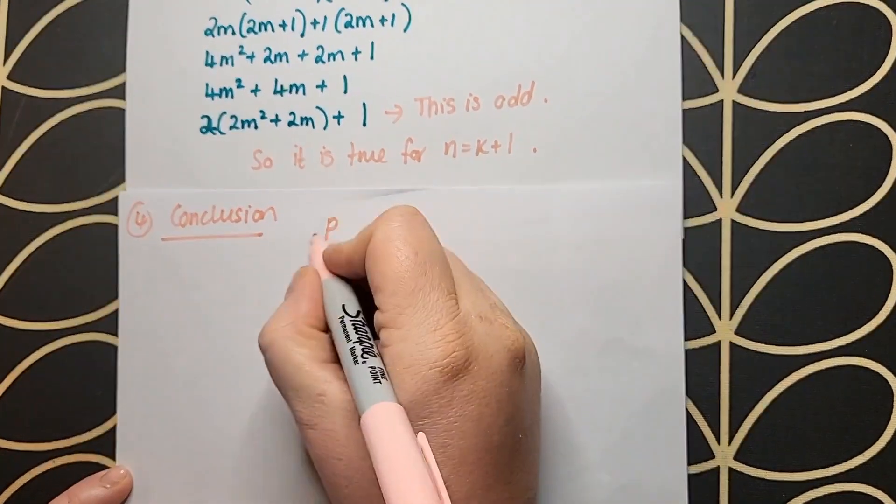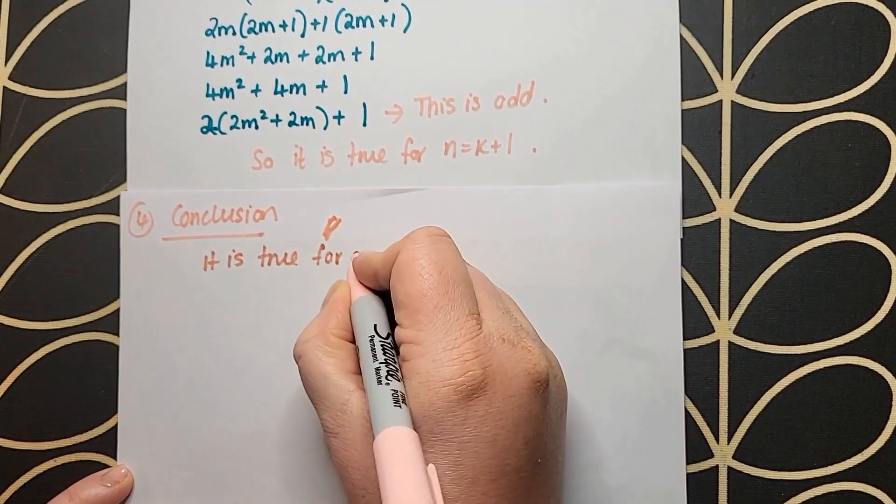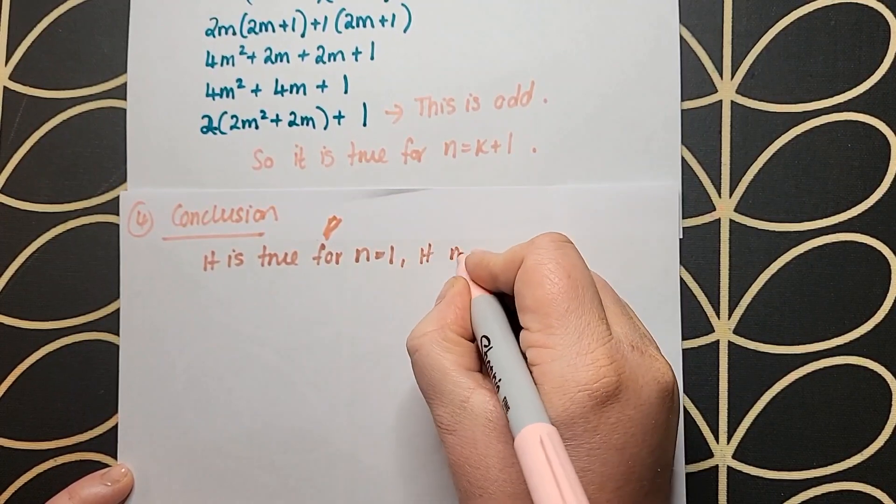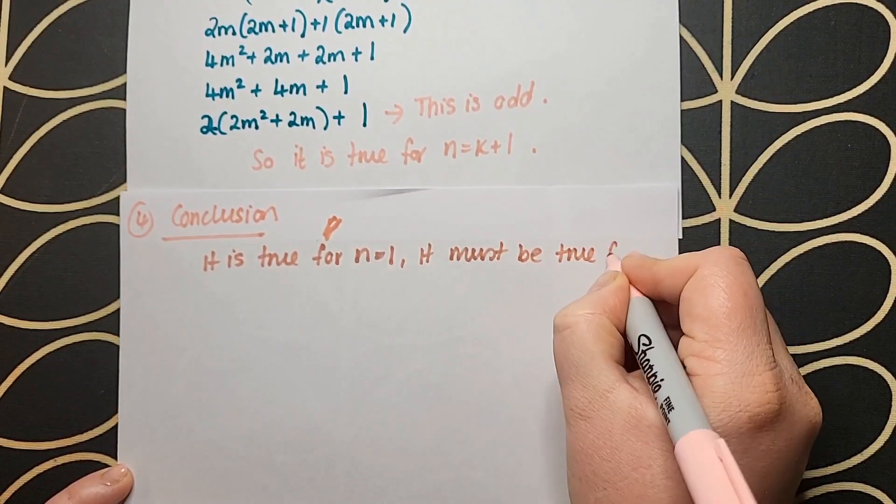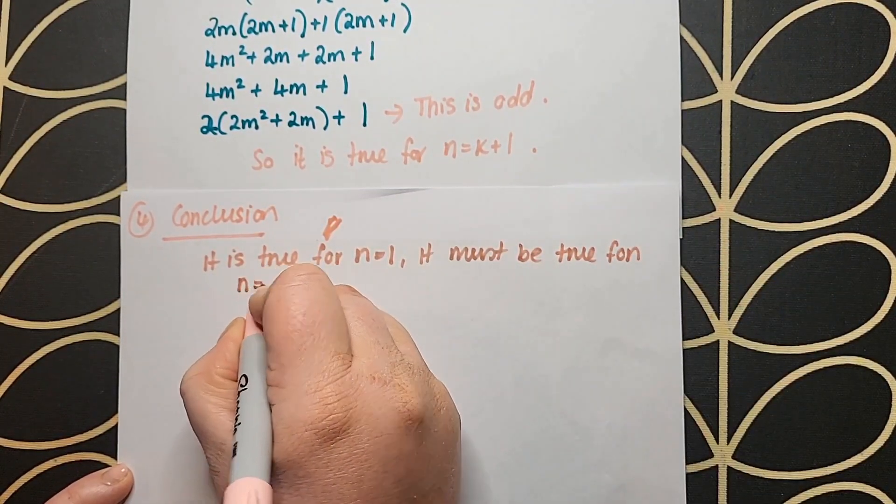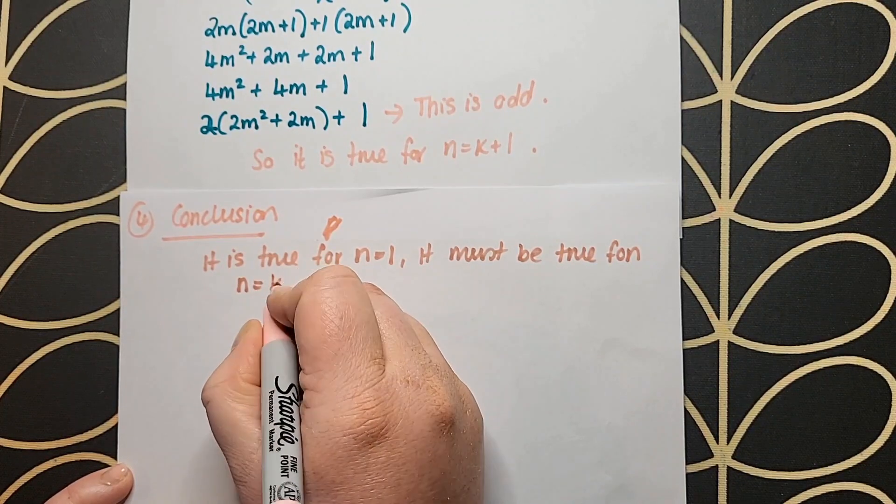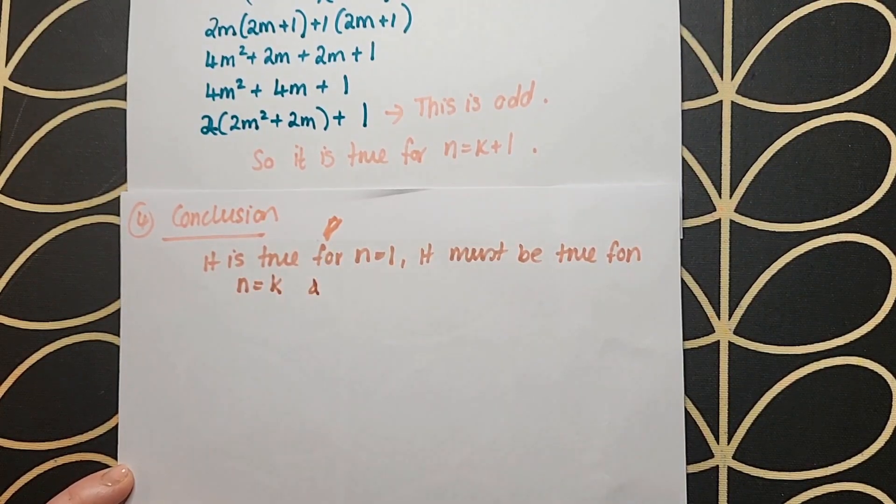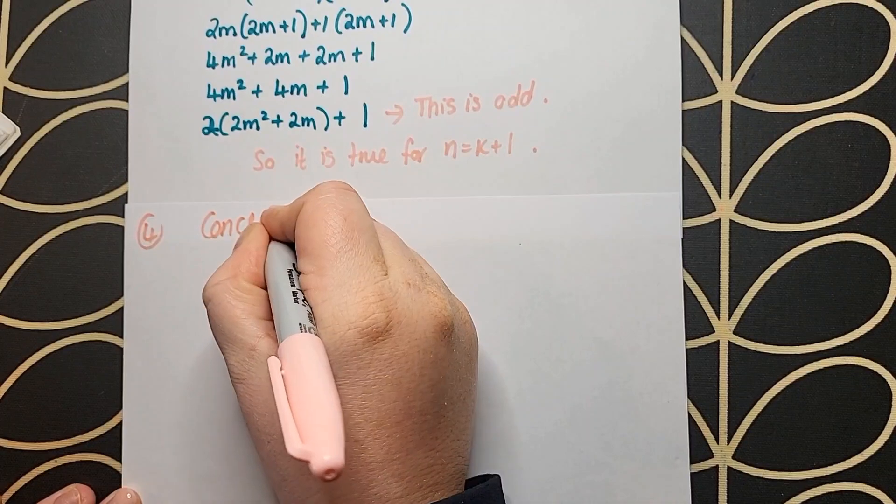The fourth step of proof by induction is your conclusion, and this is very important. If you don't include this, you will not get full marks. It's as simple as that. We need to say it was true for n equals 1. It was true for n equals k plus 1 whenever it's true for n equals k.